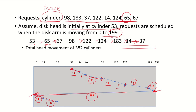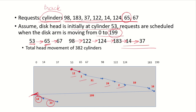Adding all the cylinders travelled — 12 plus 2 plus 31 plus 24 plus 2 and so on — we get a total head movement of 382 cylinders, and each request is given a fair amount of waiting time. So this is the C-scan algorithm in brief.